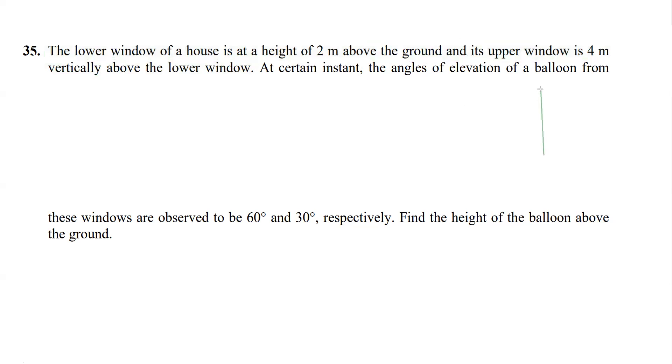So let's make a diagram. I first took the first window, say window one is over here, and this window one is at a height of 2 meters from the ground, so AB is 2. The upper window is 4 meters vertically above this lower window, so we can say BC is 4 meters.